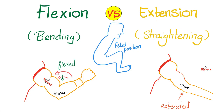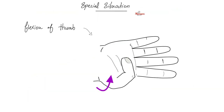Extension is the reverse of flexion. It includes: moving two ventral surfaces away from each other, increasing the angle between the two parts of the body, and assuming a position opposite to that of the fetus. Be very careful when you talk about flexion of the thumb — flexion of the thumb is the thumb moving inwards, medially towards the midline of your body and closer to your fifth digit.